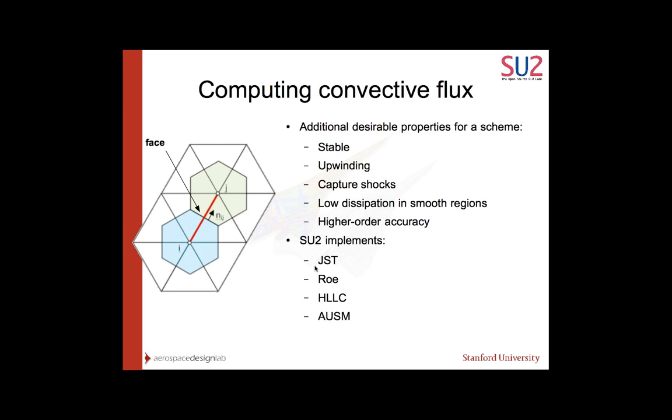What does SU2 implement? This is a list of schemes: JST, Rho, HLLC, and AUSM. All of these schemes are published in the literature. You can find them in textbooks as well as in papers. They all have advantages and disadvantages. What you want to do is find the scheme that's appropriate for your problem. It's worth mentioning that these bottom three are not just first order, but we can also make them second order using what's called the MUSCL approach.